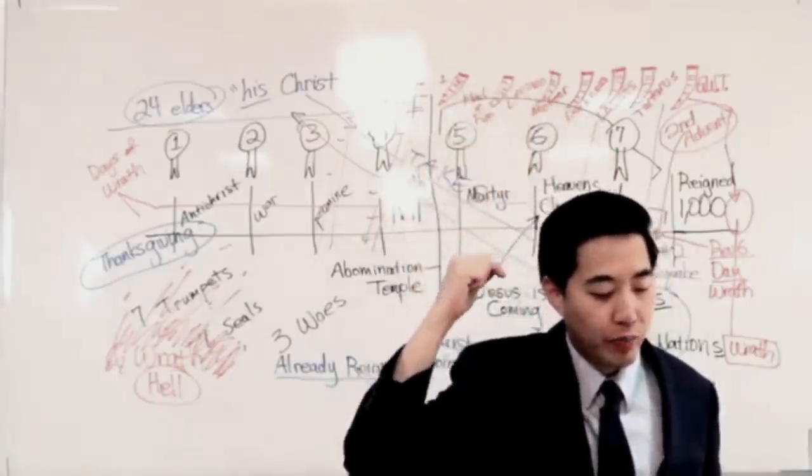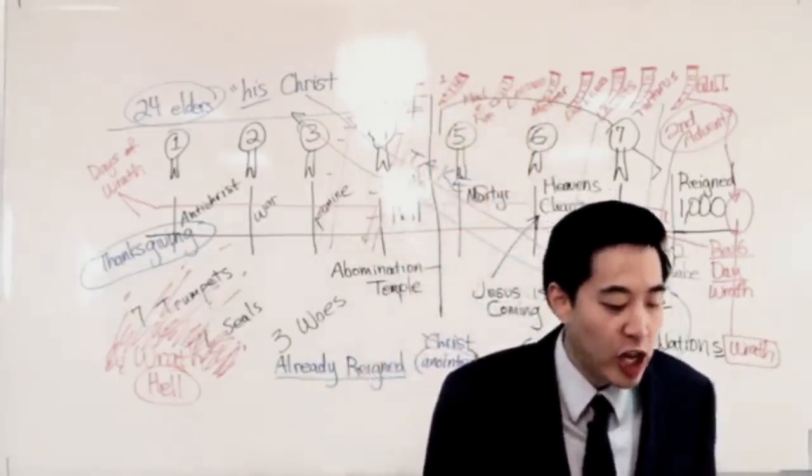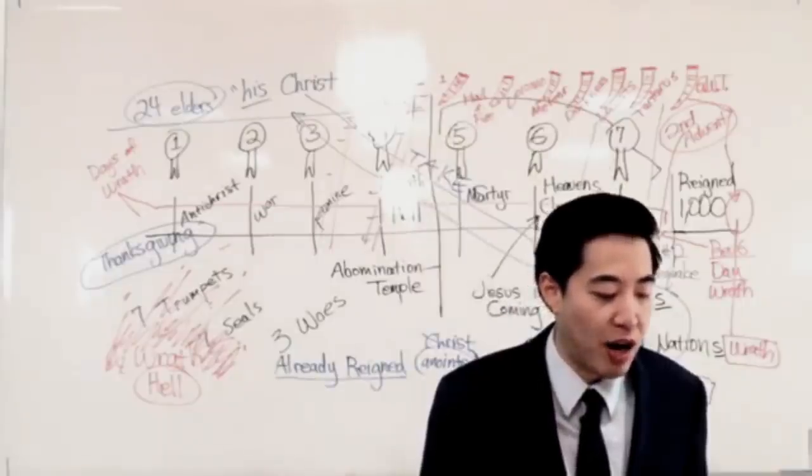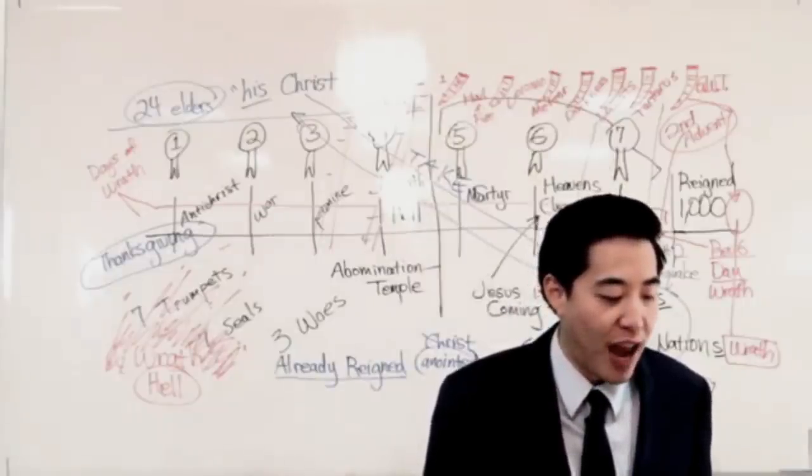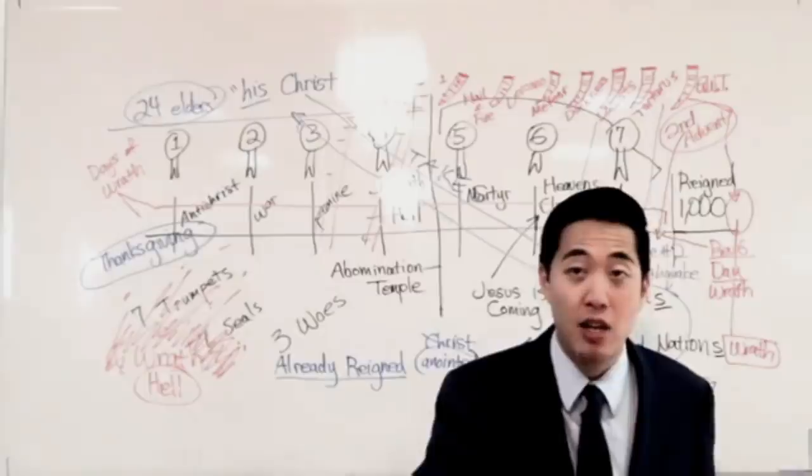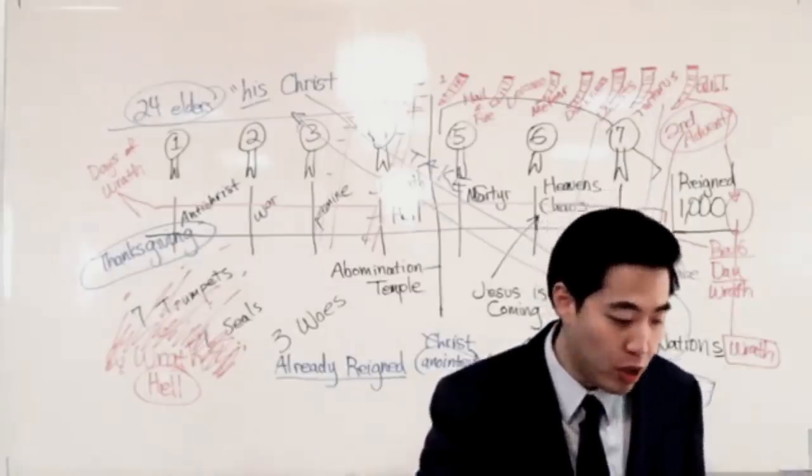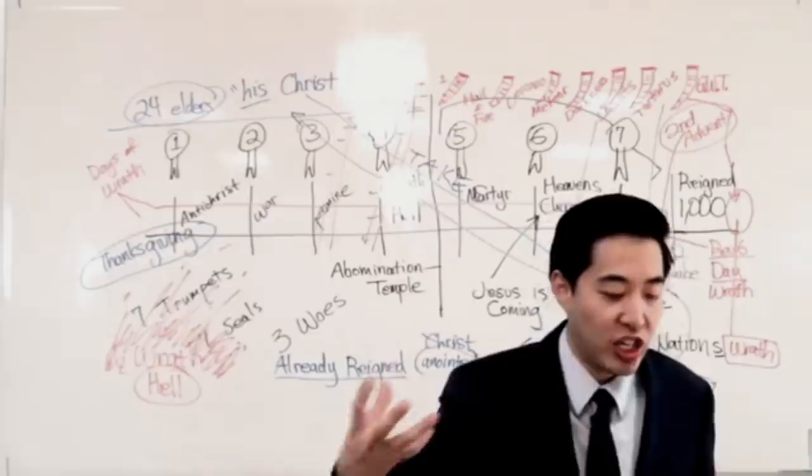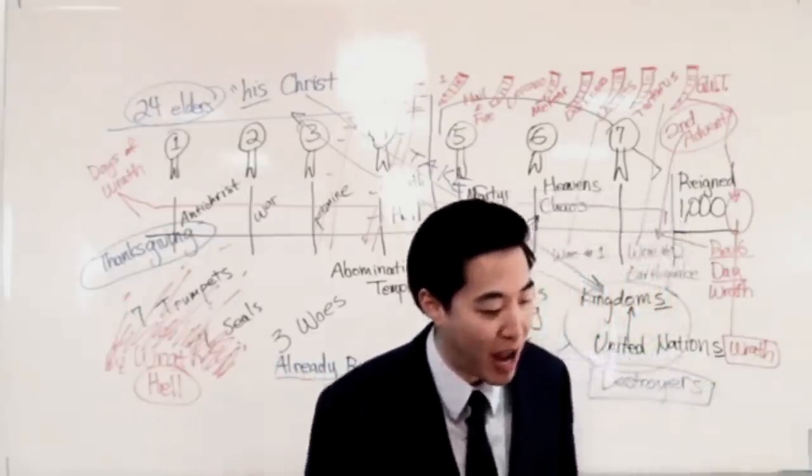She's got a crown of 12 stars. Who is this lady? She being with child cried, travailing in birth. She's in pain, she's in travail during her birth, and in pain to be delivered. So she delivers this child that she delivered in pain.